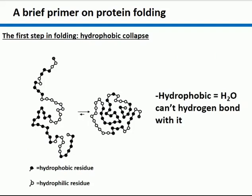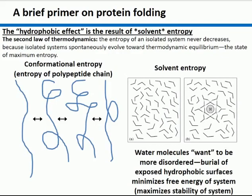When a protein folds, the first step is called the hydrophobic collapse. You have a long linear polymer composed of hydrophobic residues and hydrophilic residues. The hydrophilic ones tend to partition to the outside of the molecule, and the hydrophobic ones tend to partition to the inside. What drives this interaction is actually something rather complicated and indirect — more so than we usually feel comfortable talking about.